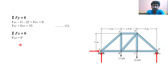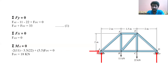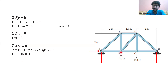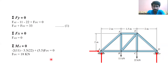To find the force in the Y direction, we apply the moment at point A, because two reaction forces are acting at point A. We get: minus 11 kN with a perpendicular distance of 2 meters, and minus 22 kN with a perpendicular distance of 3.5 meters, plus F_DY with a perpendicular distance of 5.5 meters equals zero. Solving this, we get F_DY equal to 80 kN.